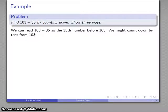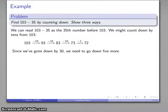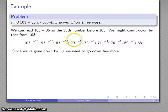So, we can read this as trying to find the 35th number before 103. And what I might do is count down by 10s from 103. So, I'll count backwards. That's 103, 10 backwards is 93, 10 back is 83, 10 back is 73. That takes me back 10, 20, 30. I need to go 5 more, and I'll just count back by 1s. So, 1, 2, 3, 4, 5. And going back 35 takes me to 68. So, 103 minus 35 is 68.